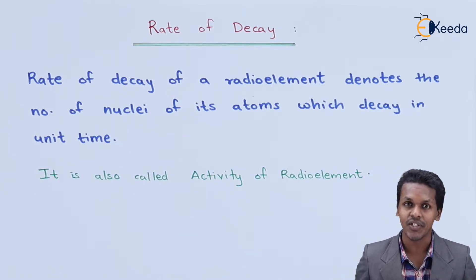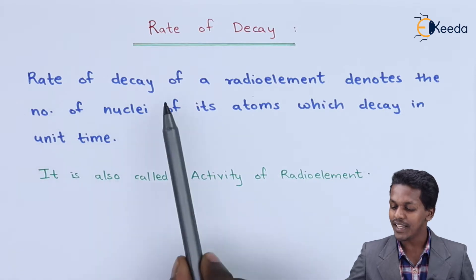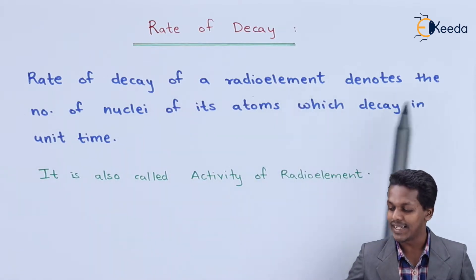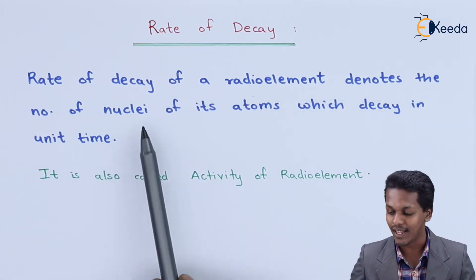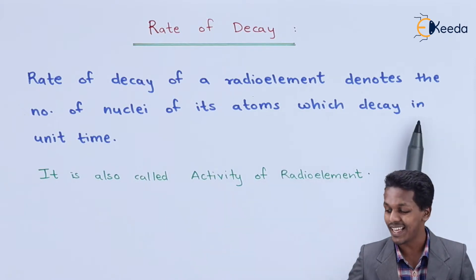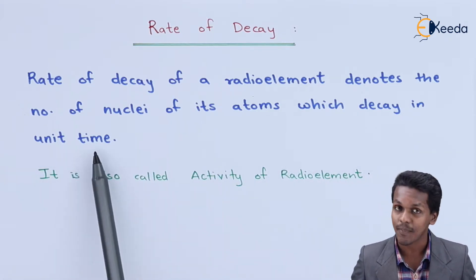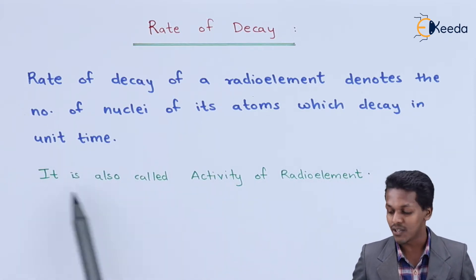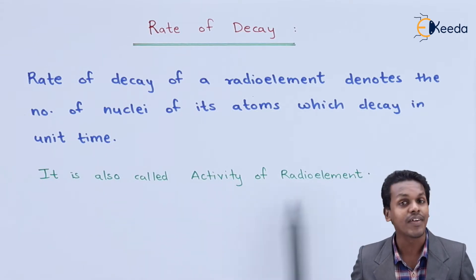Let me help you understand with this definition: the rate of decay of a radioelement denotes the number of nuclei of its atoms which decay in unit time. It is also called the activity of the radioelement.